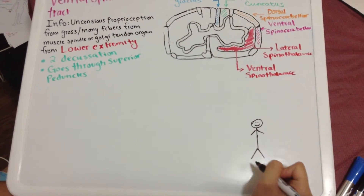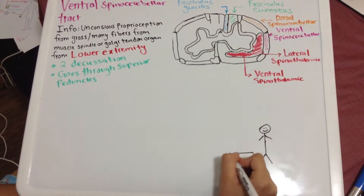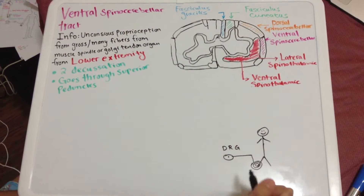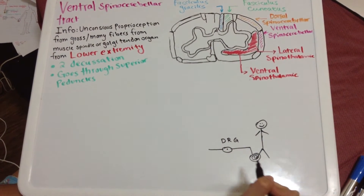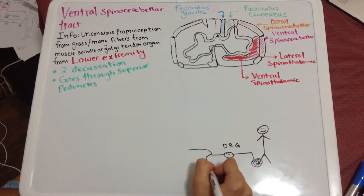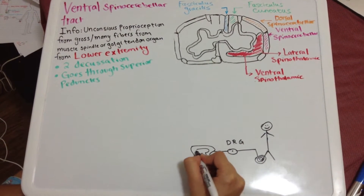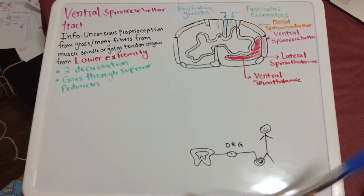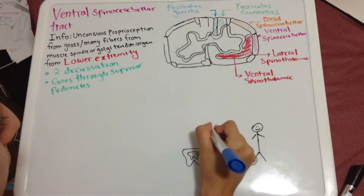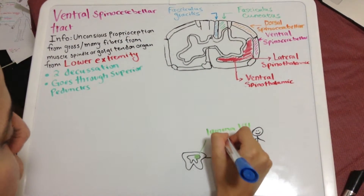The tract takes information from muscle spindles in the lower extremity. The cell bodies are located in the dorsal root ganglion, and the information enters the spinal cord at levels below C8.